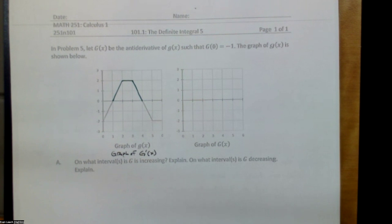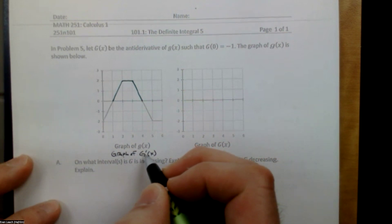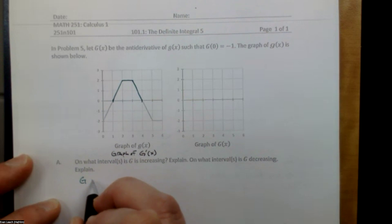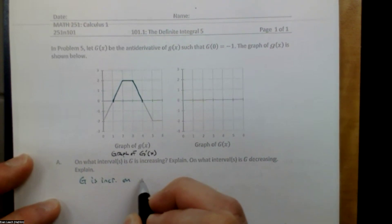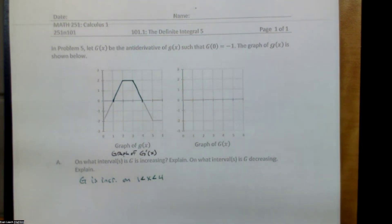The first question was about reading the sign of the derivative to determine the direction of the function. On what interval or intervals is capital G increasing, and on what intervals is capital G decreasing? This is where we read the sign of little g, which is the derivative. Since little g is big G prime, capital G is increasing on the interval from one to four. I'm going to use strictly less than, because at one and at four the derivative is zero, so the function G is flat.